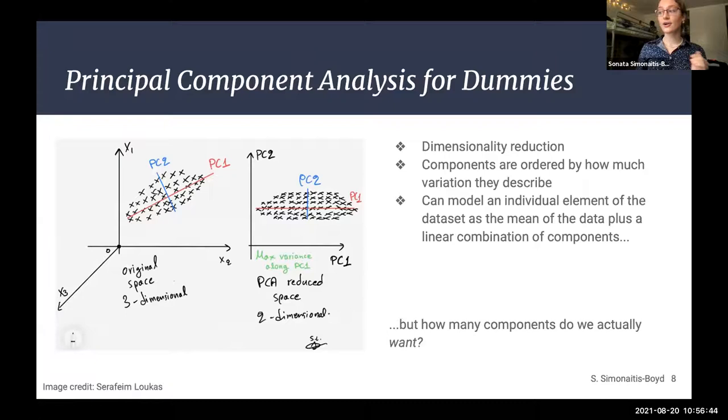Now, principal component analysis is a type of dimensionality reduction. In short, we're going from a higher dimension to a lower dimension and are expressing the data more simply. As the figure shows, the data set originally starts in a three-dimensional space, but then it's reduced to a two-dimensional space, where rather than describing each data point in three-dimensional space, you describe it as a combination of the two principal components. So in a two-dimensional space, these components are ordered by how much variation they describe. But what we really want PCA for is this last feature. The fact that we can model an individual element of the data set as the mean of the data, plus a linear combination of components.